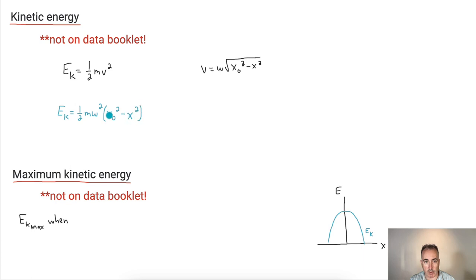Remember, x0 is your maximum amplitude. Oh, sorry, maximum displacement, which is otherwise known as amplitude. This is your displacement at any point. So this one right here, you don't get. But you should be able to get it yourself by just combining EK and v.